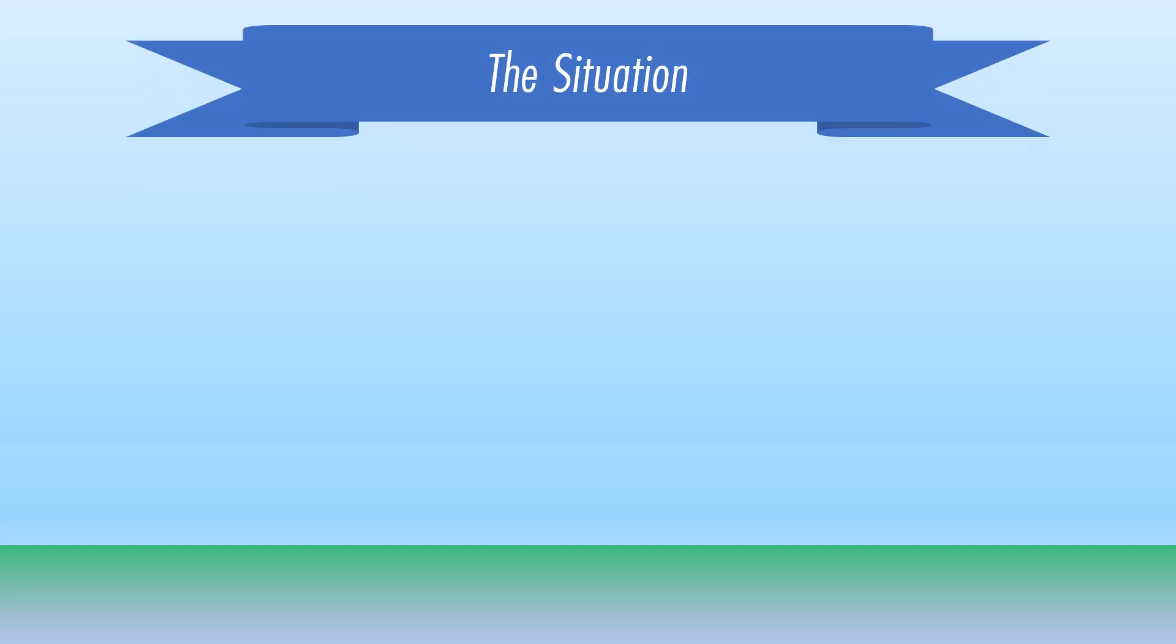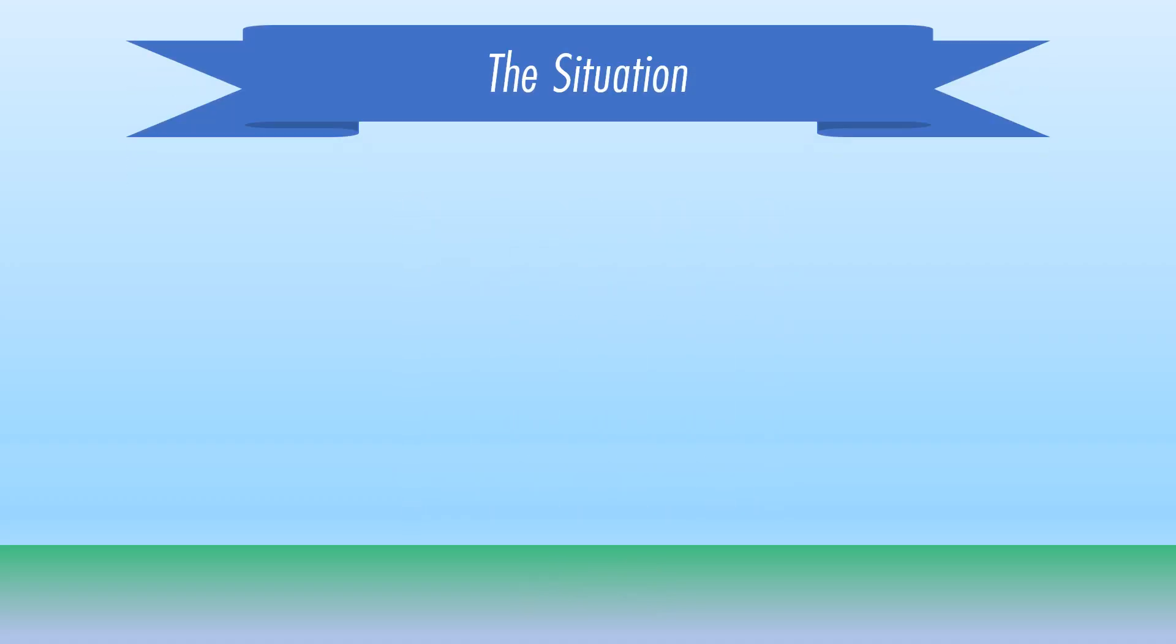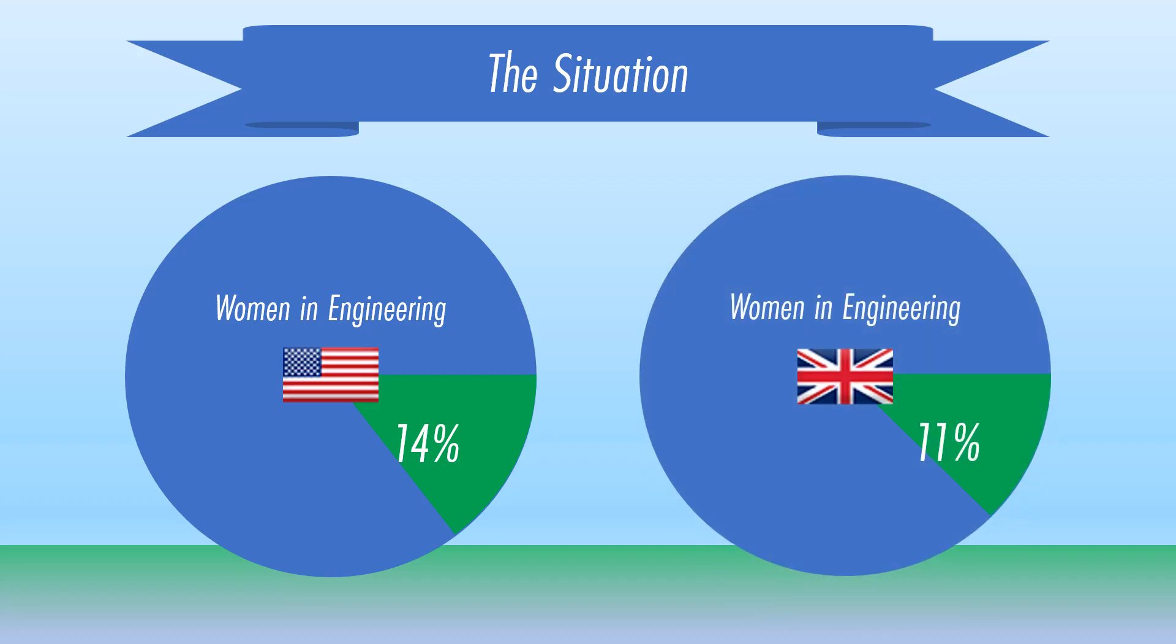The engineering field also faces some societal issues. In 2017, out of 200,000 engineering graduates in over 300 schools all around the United States, females make up only 22.8%, up 2% from 2008. In the United States, only 14% of engineers are females. This figure drops to 11% in the United Kingdom.